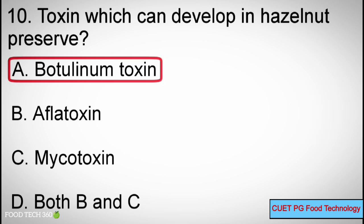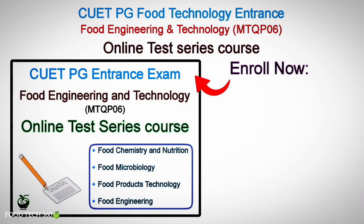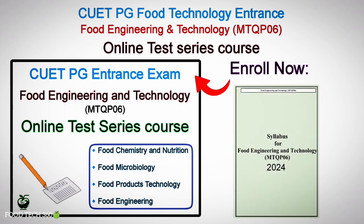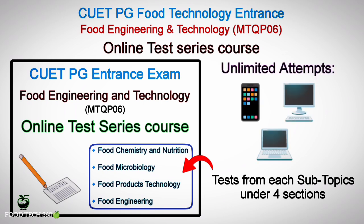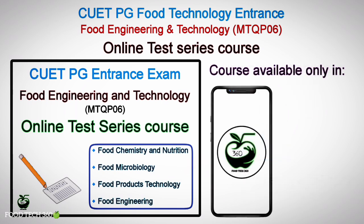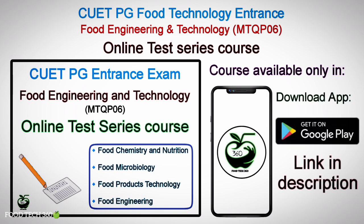Foodtech360 has launched an online test series course for CUET PG food engineering and technology entrance exam, exactly as per the current syllabus. You will get test series from all four sections and subtopics under each section. You can attend this test unlimited times from your phone, desktop, or laptop. This test series course is available only in the Foodtech360 Android app, so download the app now from the Google Play Store.